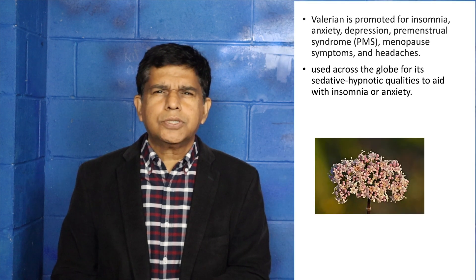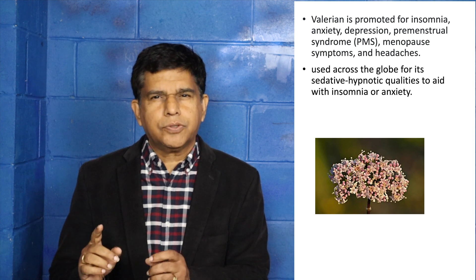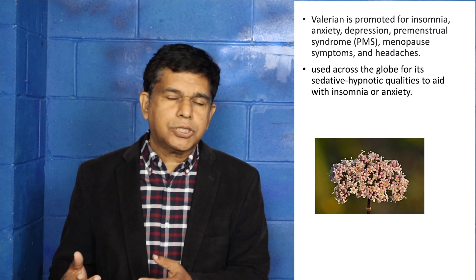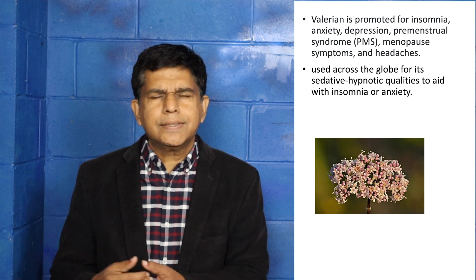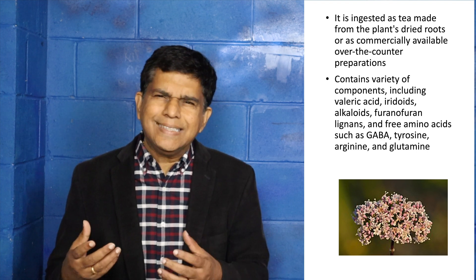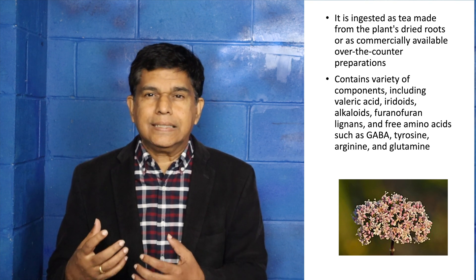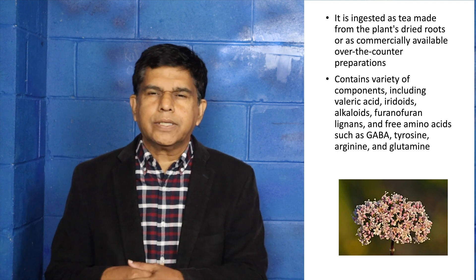What do we use valerian root for? People have mainly been using it for insomnia as a sleep aid, depression, postmenopausal syndrome, menstrual symptoms, and headache. It has sedative and hypnotic properties. People usually make an extract and drink it as a tea.